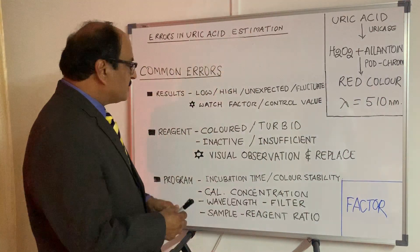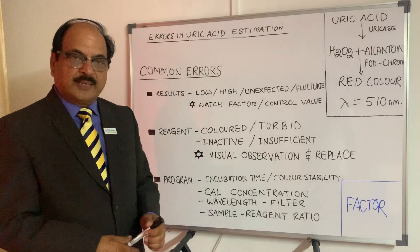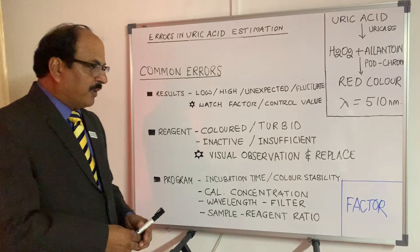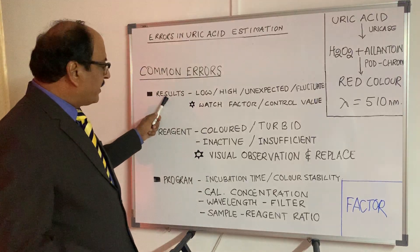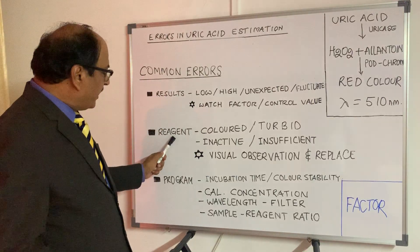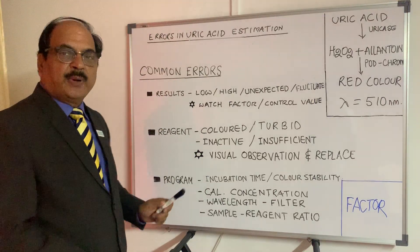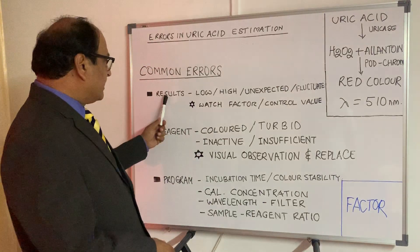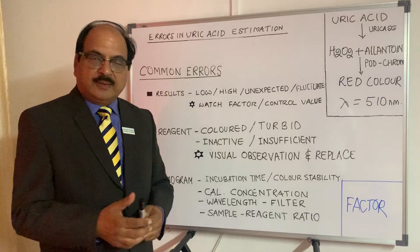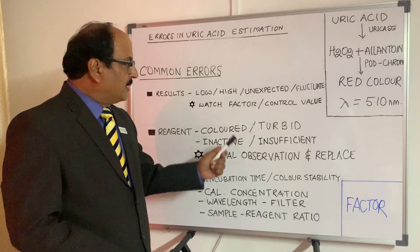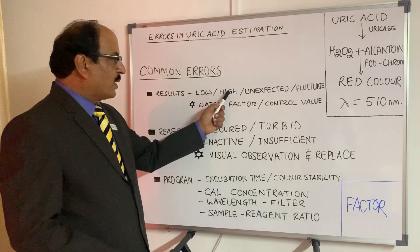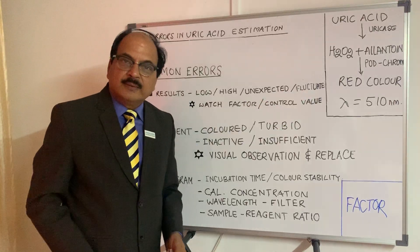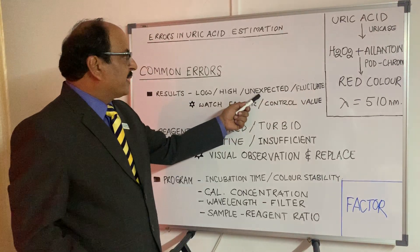Now let's come to the errors as usual. There are three types of errors which are commonly prevalent: result-oriented, reagent-oriented, and program-oriented. Now let's take them one by one. Result-oriented errors have three or four possibilities: low results, high results, sometimes fluctuating between low and high, and unexpected results.